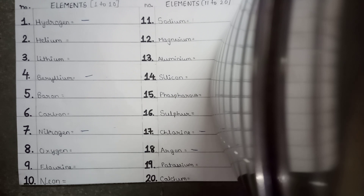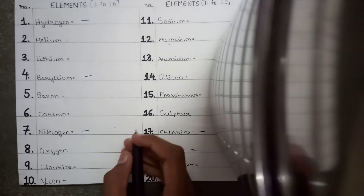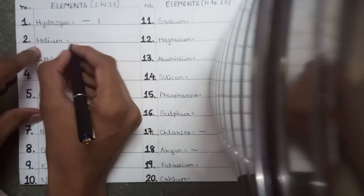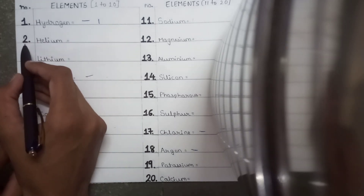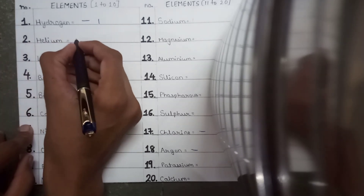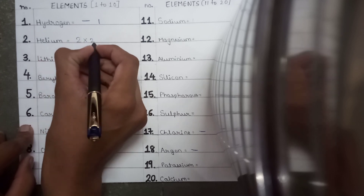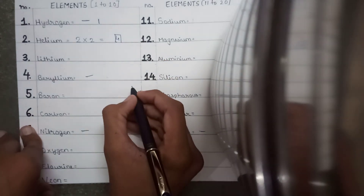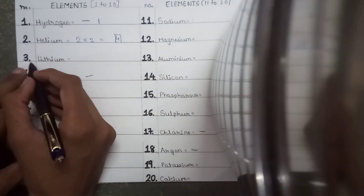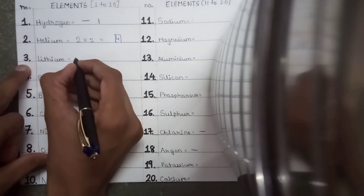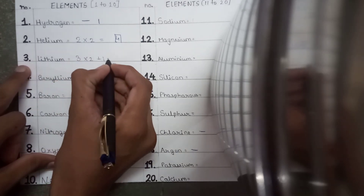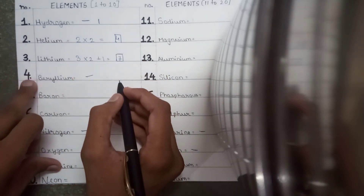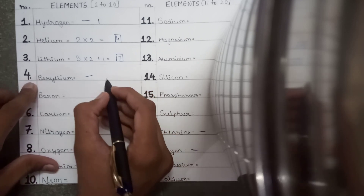So now let's get started. First we write hydrogen's atomic mass, which is 1. There is no trick for hydrogen. For helium, the atomic number is even, so we do 2 into 2 to get atomic mass 4. For lithium, atomic number is 3, which is odd, so we do 3 into 2 plus 1 to get 7. There is no trick for beryllium, so beryllium's atomic mass is 9.